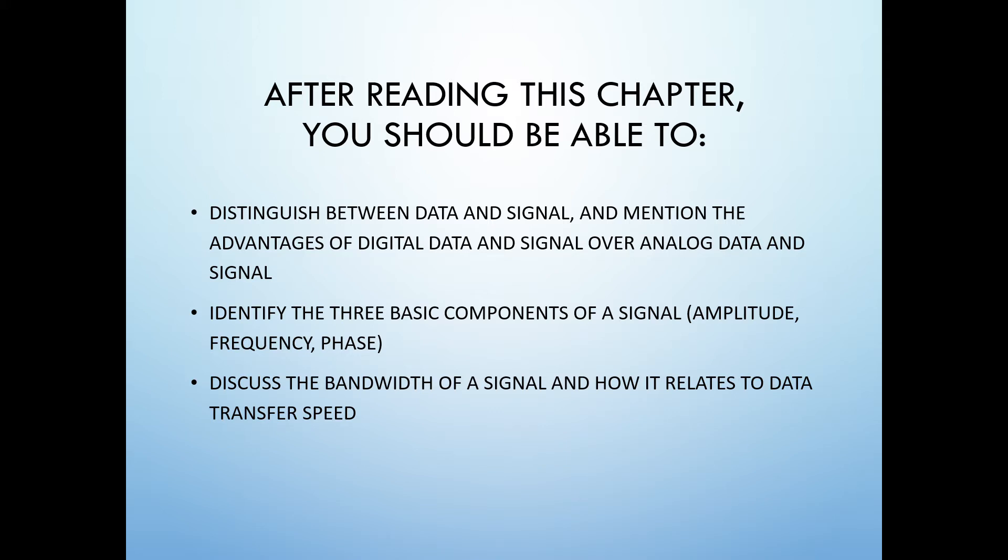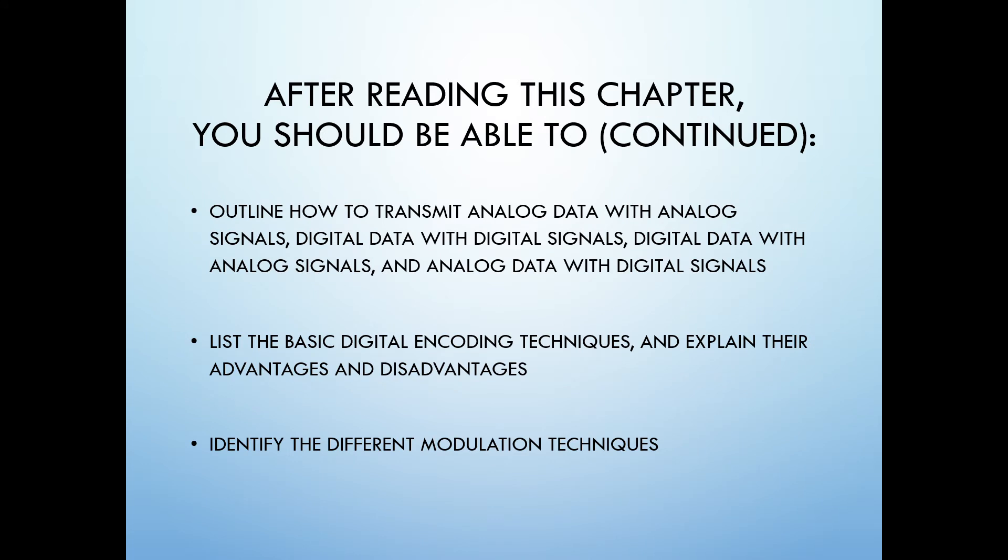The main objectives intended for this chapter include: distinguish between data and signal and mention the advantages of digital data and signal over analog data and signal. Second is to identify the three basic components of a signal—amplitude, frequency, and phase—and discuss the bandwidth of a signal and how it relates to data transfer speed. And we also want to outline how to transmit analog data using analog signals, digital data with digital signals, digital data with analog signals, and analog data using digital signals.